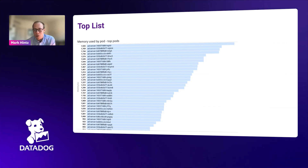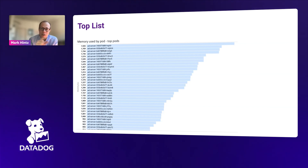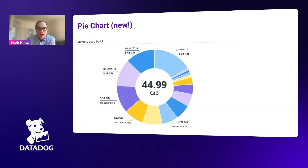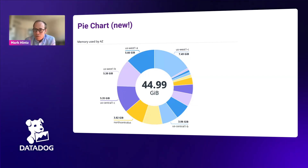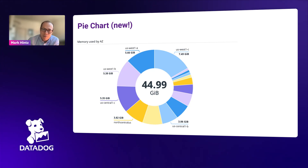Sometimes you also want to know not just individual values for each element, but how those values contribute to some total. If contribution to an overall total is what you need, you might want a pie chart. This is a visualization we only recently added to the product after a long time of hesitating, but after many customer requests we dropped it into the product.